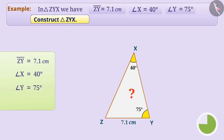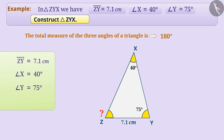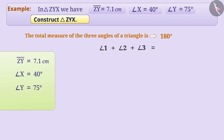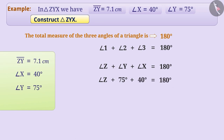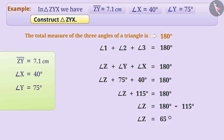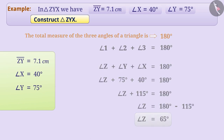We know the length of side ZY, so if we can find the measurement of angle Z, we can construct triangle ZYX. We know the total measurement of the three angles of a triangle is 180 degrees. In triangle ZYX: angle Z plus angle Y plus angle X equals 180 degrees. So angle Z plus 75 degrees plus 40 degrees equals 180 degrees, which means angle Z equals 180 minus 115 degrees. Hence, angle Z measures 65 degrees. Now we know angle Z and angle Y and the length of side ZY included between them, so we can construct triangle ZYX.